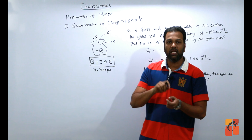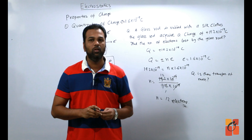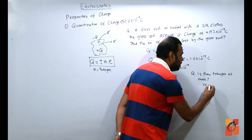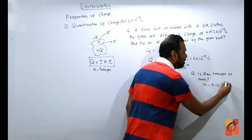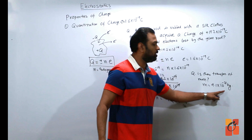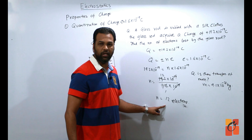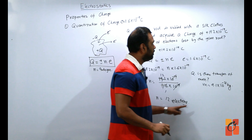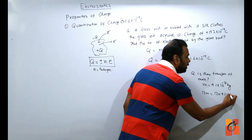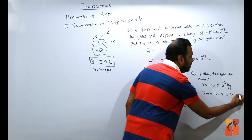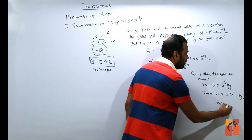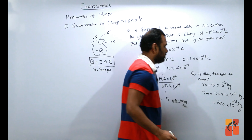Given: Q = +19.2 × 10⁻¹⁹ coulomb। We know Q = ±Ne, where e = 1.6 × 10⁻¹⁹ coulomb। Substitute: 19.2 × 10⁻¹⁹ = N × 1.6 × 10⁻¹⁹। Divide करो: N = 19.2 / 1.6 = 12. So 12 electrons के transfer से — glass rod से silk पर — यह charge create होगा।